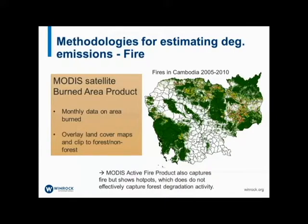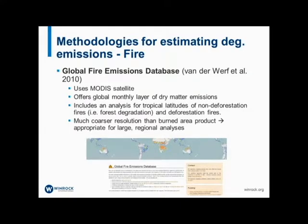For fire — where fire causes forest disturbance but not deforestation, that's where we're looking at degradation emissions. It's also important to note that non-CO₂ greenhouse gases — nitrous oxide and methane — are generally significant in fire cases, so it's important to include those within the accounting system for completeness. For fire, a remote sensing approach is generally acceptable. There are remote sensing products — the MODIS satellite burned area product offers monthly data on the area burned. As shown in this map of Cambodia, using MODIS data overlaid with the land cover map, practitioners simply need to overlay land cover maps and clip to forest/non-forest to determine where fires have occurred and quantify the total area.